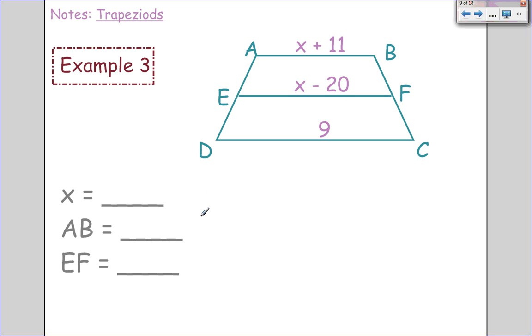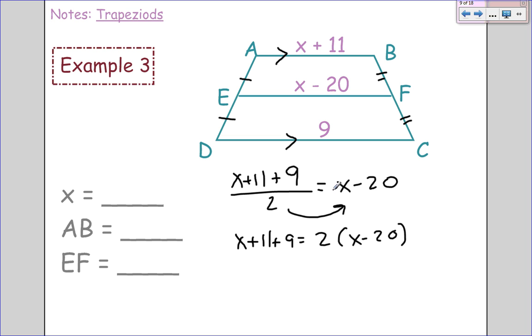Last one we're going to do with mid-segment. We start off the same, we add the bases. So x plus 11 plus the other base is 9. And really, these should be marked: those are parallel, and this is congruent to this, and this is congruent to this. So the bases are x plus 11 plus 9 divided by 2, because we have to find the average, equals x minus 20. Now, how do we move the 2? We multiply it to both sides. So x plus 11 plus 9 equals 2 times x minus 20. Now 11 plus 9 is 20, and 2 times x is 2x, and 2 times minus 20 is minus 40. Now we subtract x from both sides. We get 20 equals x minus 40, and then add 40. So x equals 60.